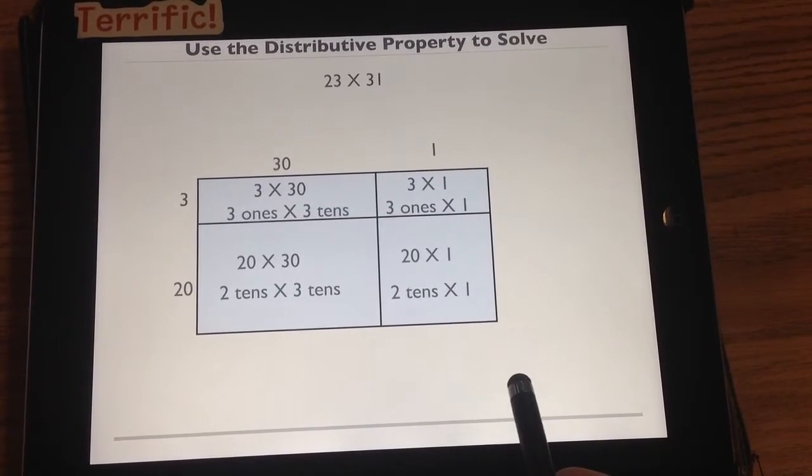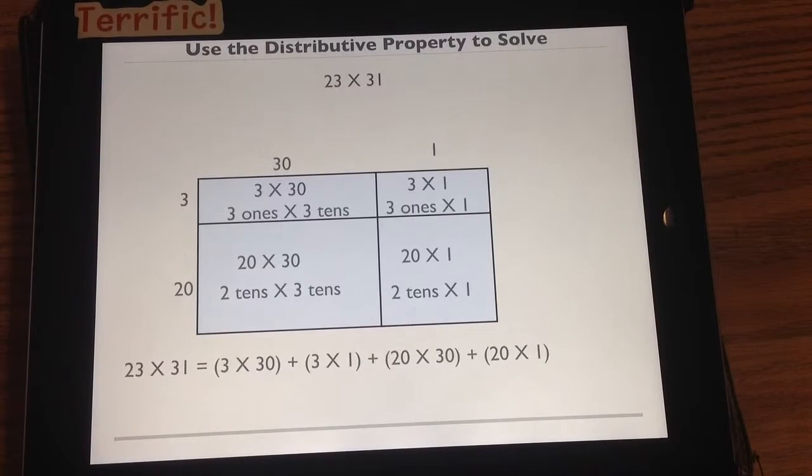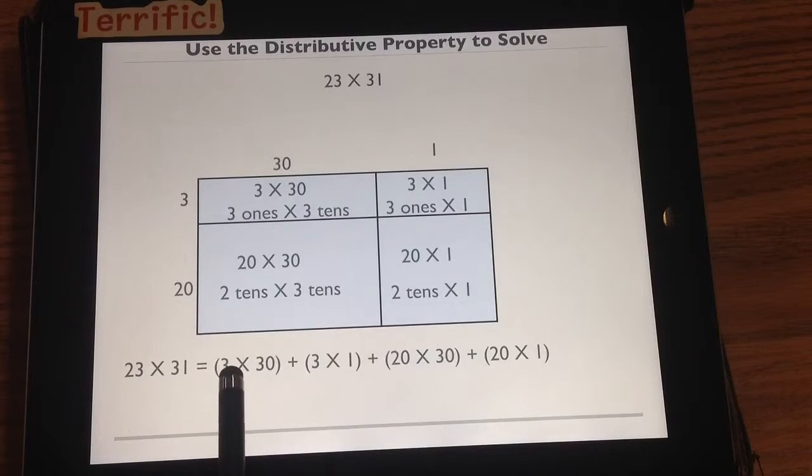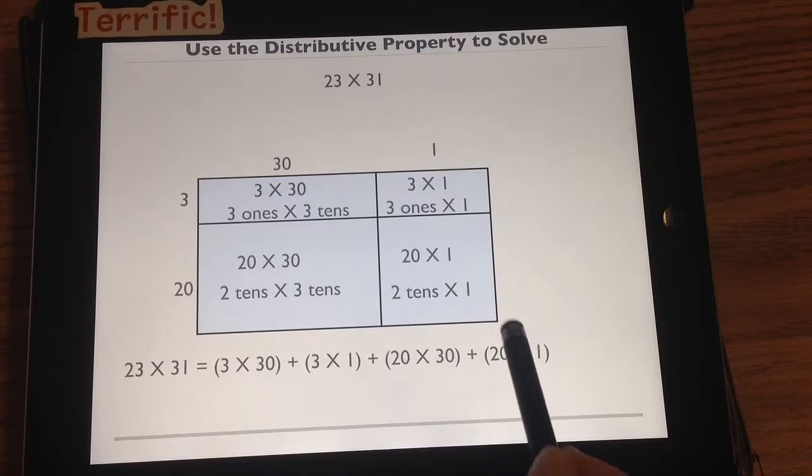Again, our distributive property looks like this. 23 times 31. And we broke up each piece. 3 times 30 is here. 3 times 1 is here. 20 times 30 is here. And 20 times 1 is there. Now, I told you we could do it a different way. That way is partial products.